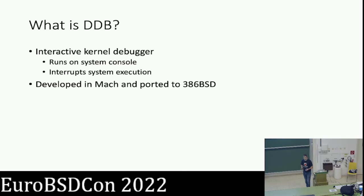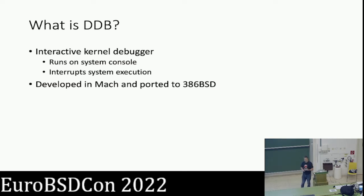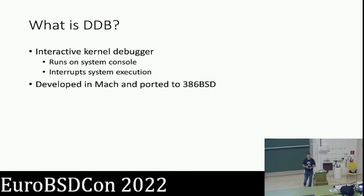To the best of my knowledge, DDB was developed in Mach originally, because that's what all the licenses say. It looks like it first appeared in the BSDs as part of the 386BSD port, though the detailed history of 386BSD is somewhat unclear. So as far as I can tell, it showed up at some point during that timeline and that's how it eventually made its way into FreeBSD.